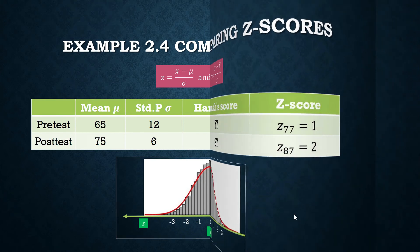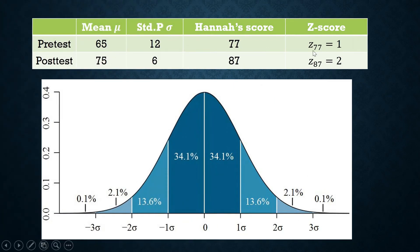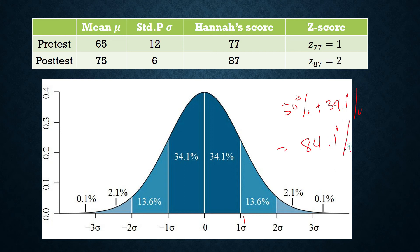How do we interpret these results? In the pre-test, Hana's Z-score is 1. That means her score is one standard deviation from the mean. In relation to her classmates' scores, it also means that her score is better than 50% plus 34.1%, which is equal to 84.1%. These are the combined areas of those regions. So her score is greater than 84.1% of the scores in the pre-test.